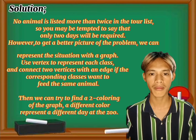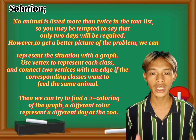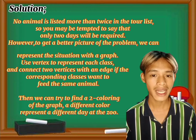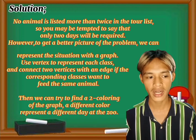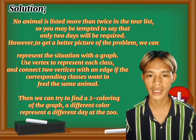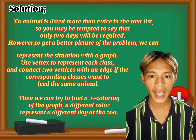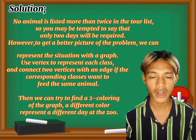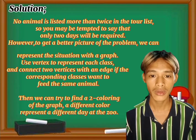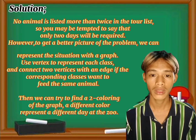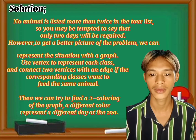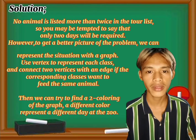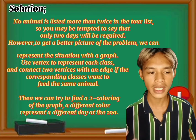The solution: no animal is listed more than twice in the tour list. For example, class one and class two — class one wants to feed elephants, giraffes, and hippos, and class two wants to feed monkeys, rhinos, and elephants. There is only one animal that is the same between them. You may be tempted to say only two days will be required. However, to get a better picture of the problem, we can represent the situation with a graph.